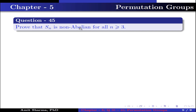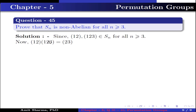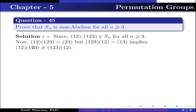Question number 45. Prove that Sn is a non-abelian group for all n ≥ 3. The permutations (1,2) and (1,2,3) both belong to Sn for n ≥ 3. The product (1,2)∘(1,2,3) = (2,3), because: 1 maps to 1 (identity), 2 maps to 3, and 3 maps to 2. But the product (1,2,3)∘(1,2) = (1,3), because: 1 maps to 3, 3 maps to 1, and 2 is fixed (identity). Since (1,2)∘(1,2,3) ≠ (1,2,3)∘(1,2), this implies Sn for all n ≥ 3 is a non-abelian group.